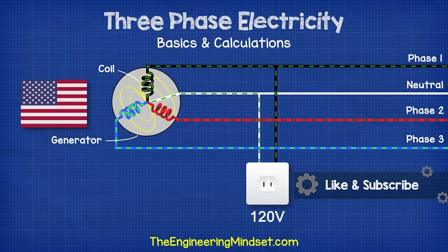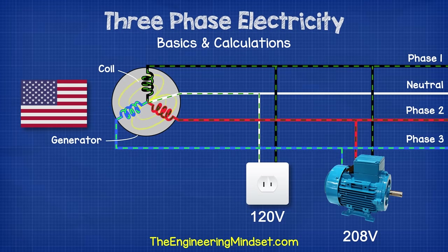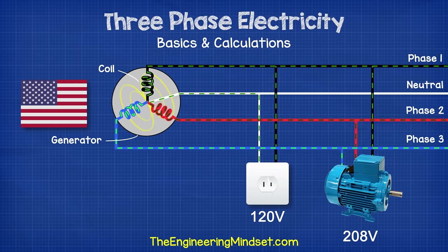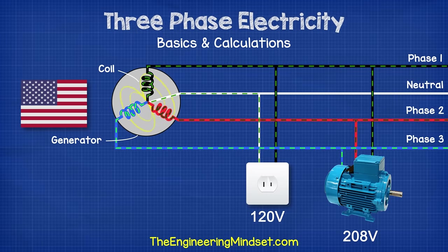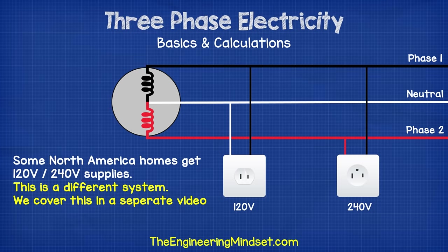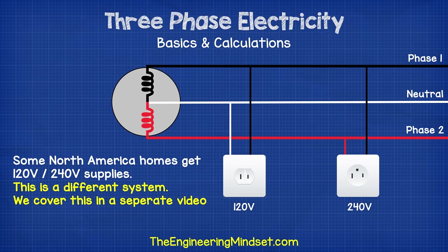But we can also connect to two or three phases at once — two or three coils of the generator. This is typical in large properties with large equipment and appliances which need more power. In North America, you often find two-phase supplies in homes with 120 or 240 volts. That is a completely different system and we'll cover that in a separate video. This video is only for three phase.